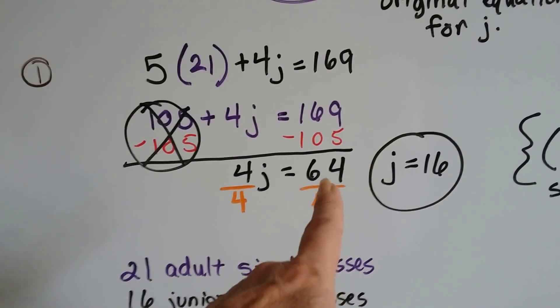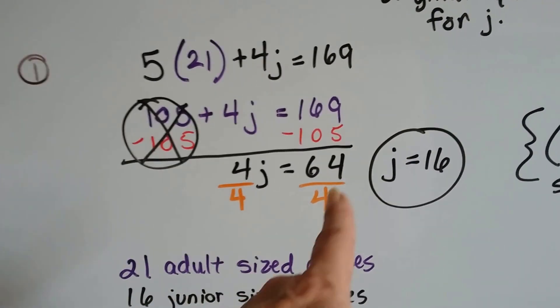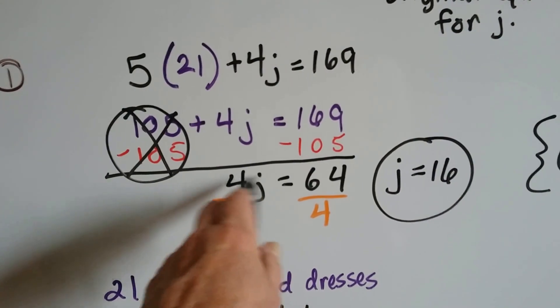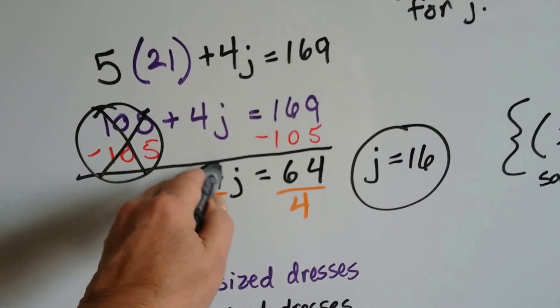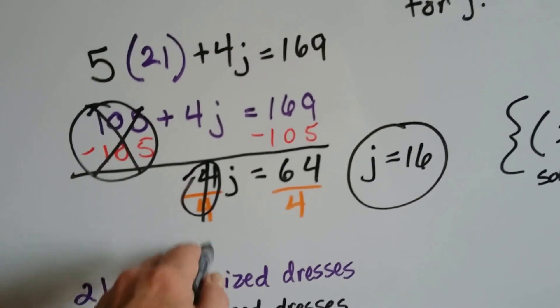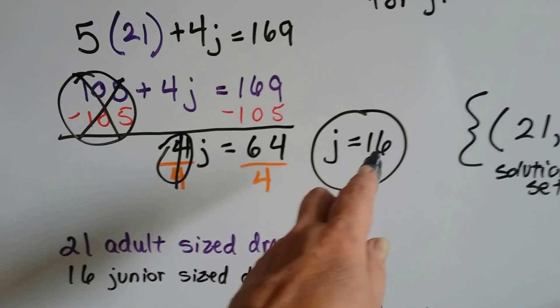4J equals 64. We divide both sides by 4 because this is multiplication. So the inverse would be division. And 4 divided by 4 is our friend the invisible 1. And 64 divided by 4 is 16.